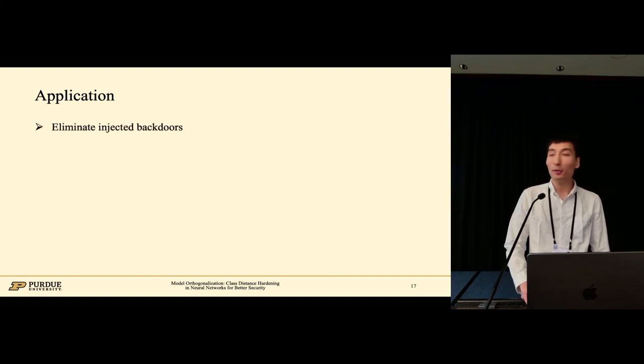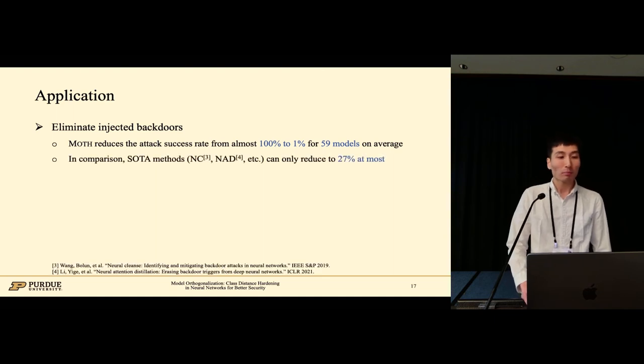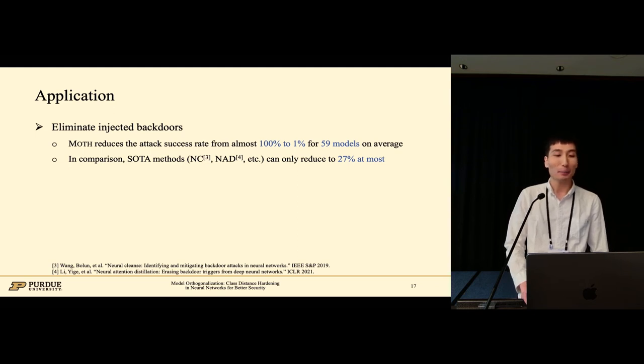We also apply MAUS in a downstream application of eliminating injected backdoors. MAUS can reduce the attack success rate from almost 100% to 1% for 15 backdoored models. In comparison, the baselines can only reduce to 27% at most.